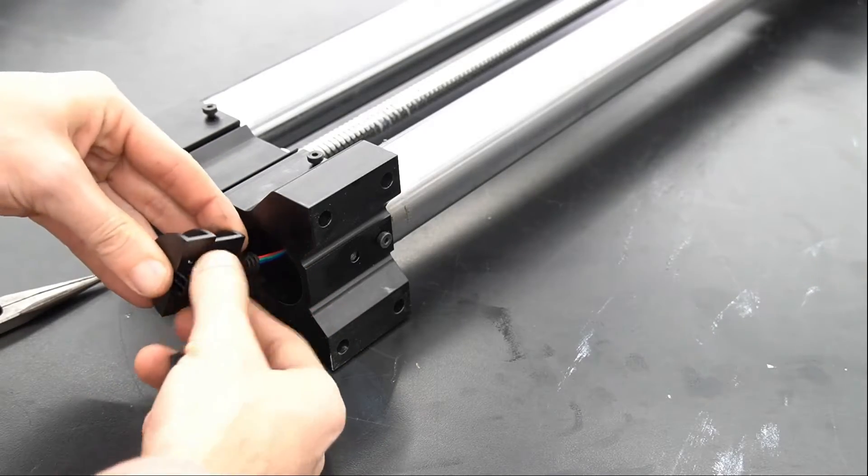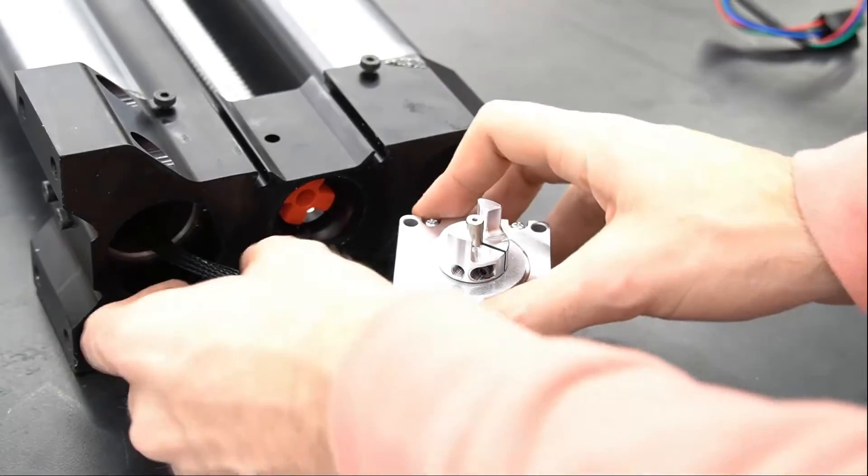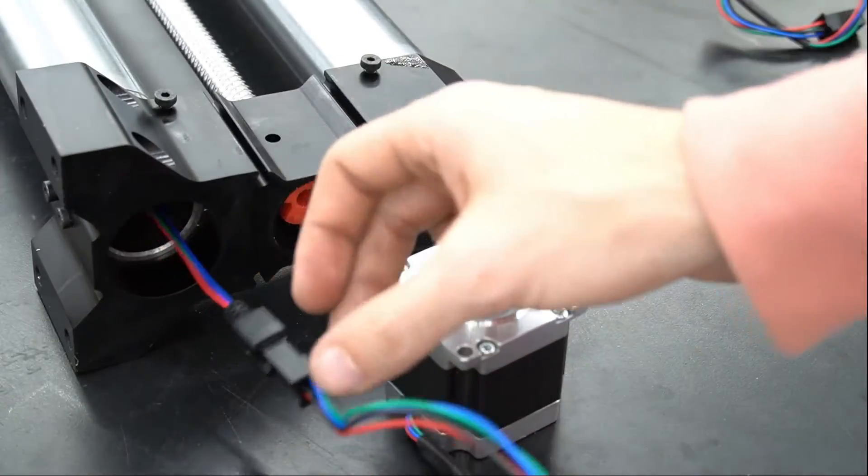That black plastic piece will split down the middle, freeing that wire so that we can get the wiggle room we need to replace our old motor with our new motor.